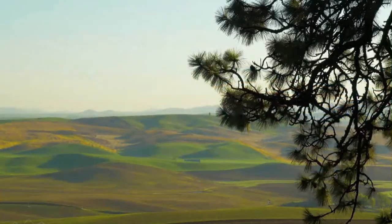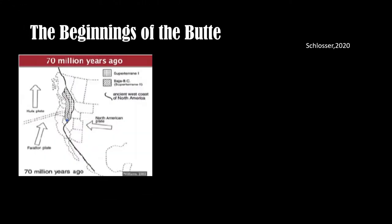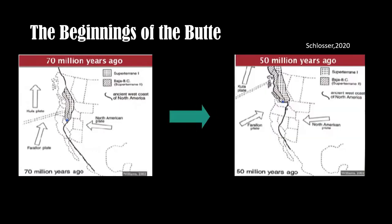Our lands were formed from the movement and distribution of plate tectonics that make up our earth. The beginnings of Kamiak Butte start about 70 million years ago, when the North American continent had its entire Pacific Northwest side submerged underwater. 20 million years later, the eastern side of Washington had risen from the push of the Juan de Fuca Plate east, which forced the continental plate upwards.